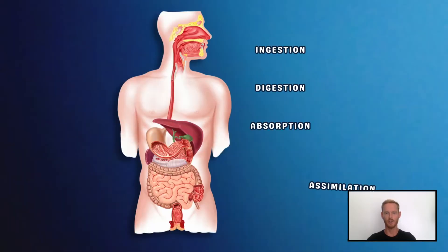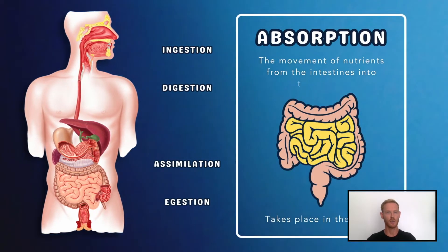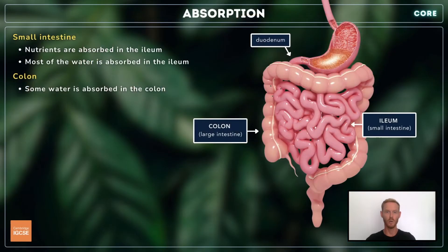In topic 7.2, we learned about the five functions of the digestive system and the parts of the system in which they occur. Absorption of small soluble molecules that have already undergone both physical and chemical digestion is one of those functions, and it takes place in the small intestine. For core, all you need to know is that almost all of the absorption of digested food and most of the water takes place in the ileum, and that some water is absorbed from the colon.